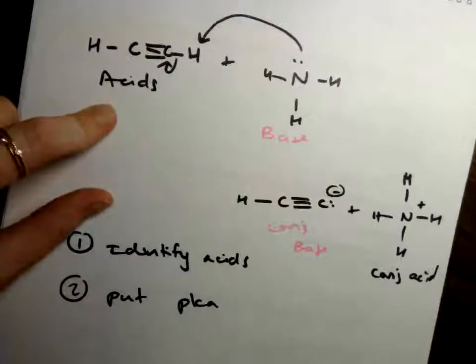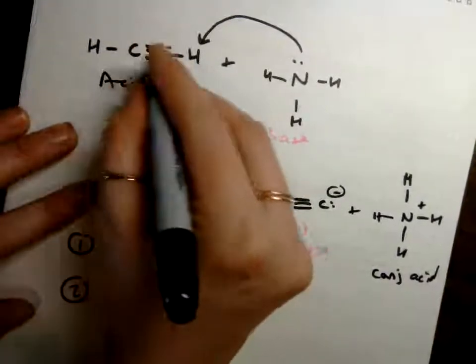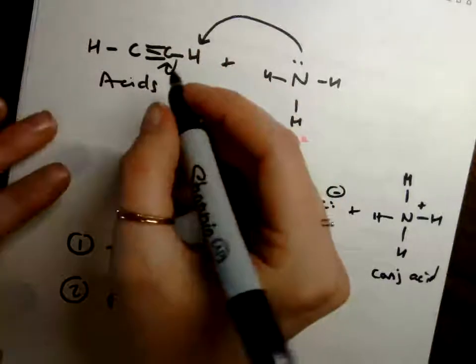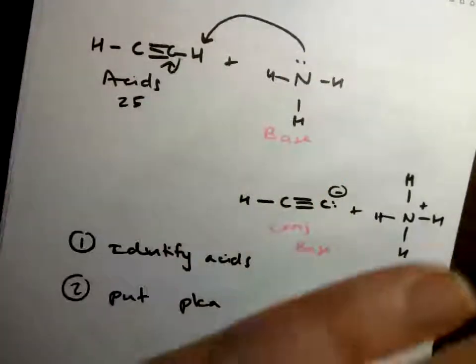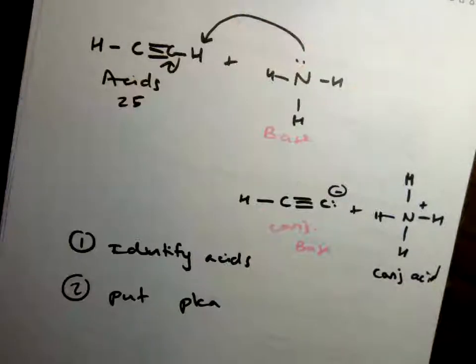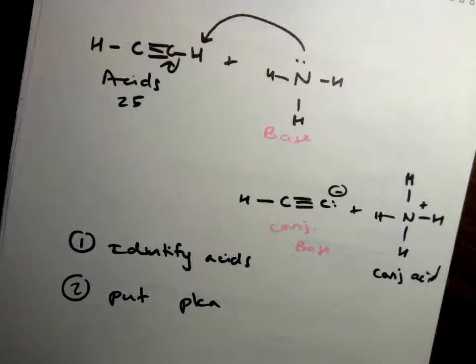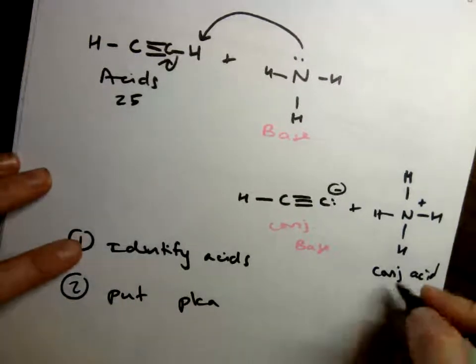So this, hopefully you have memorized. The pKa of a proton off of a carbon-carbon triple bond is 25. So alkyne is 25, alkenes 45, and alkane is 50. I just have those kind of stuffed up in my brain. And then the pKa of the conjugate acid.